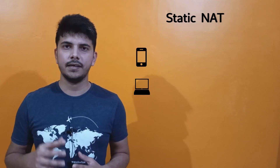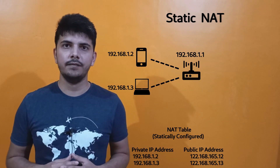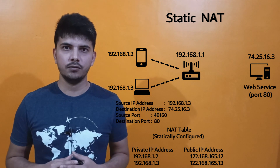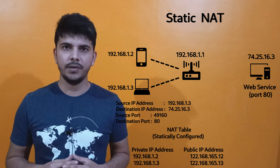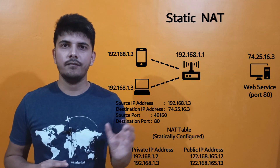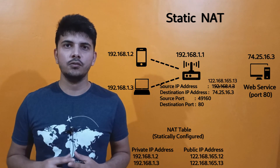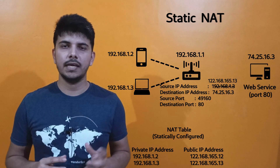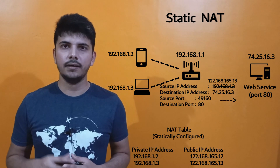Consider we have two devices connected with a router and one of the devices wants to communicate with a remote system. The device will set its source IP address as the private IP address and the destination IP address will be the destination system's IP address. When the data goes to the router, it will change the source IP address with the public IP address that is statically mapped for that private IP address, and after that it will be sent to the destination.